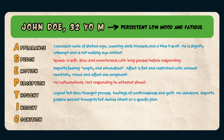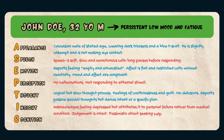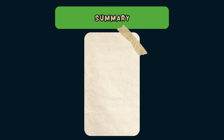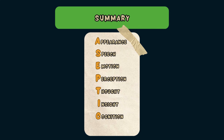His thought process is logical but slow. He has feelings of worthlessness and guilt, denies any delusions, and reports passive suicidal thoughts but does not have any intent or a specific plan. He acknowledges feeling depressed but attributes it to personal failure rather than a medical condition, demonstrating poor insight. His judgment is intact although he is pessimistic about seeking help. He is alert and oriented, with some reduced concentration, and his memory is intact. That's a summary of the Mental State Examination using the ASEPTIC framework — don't forget to assess patient risk at the end.